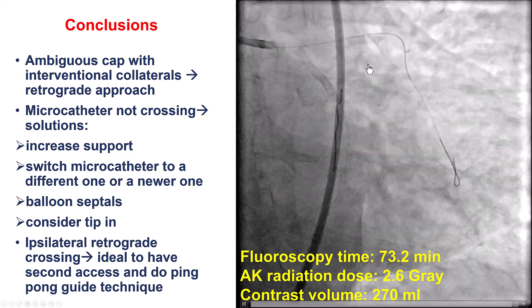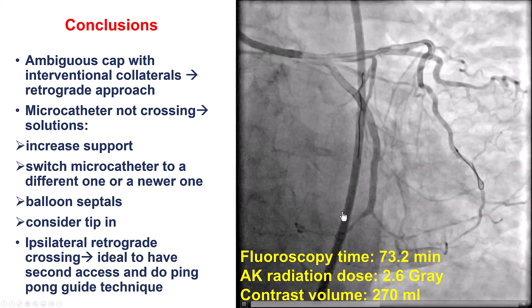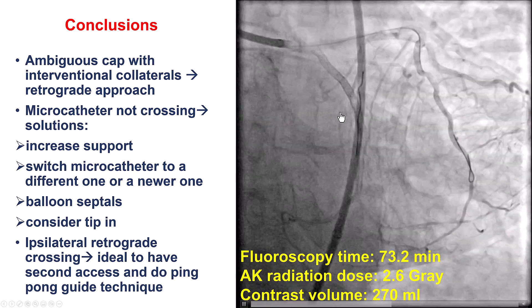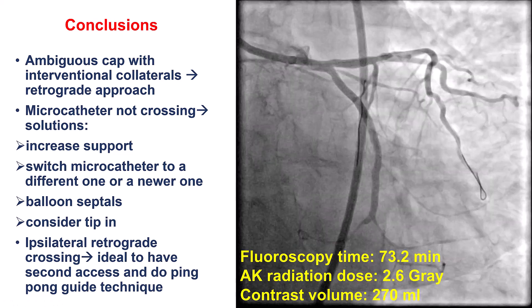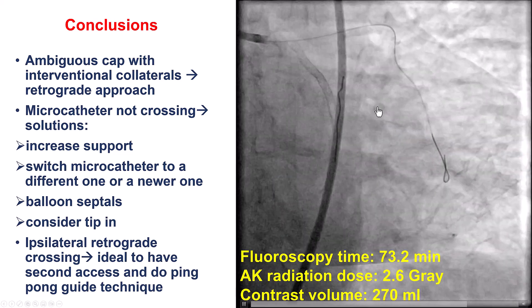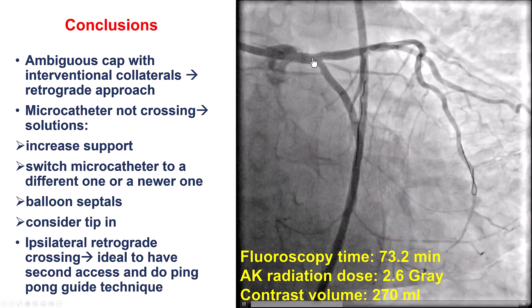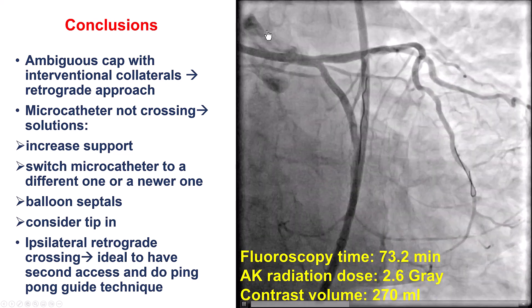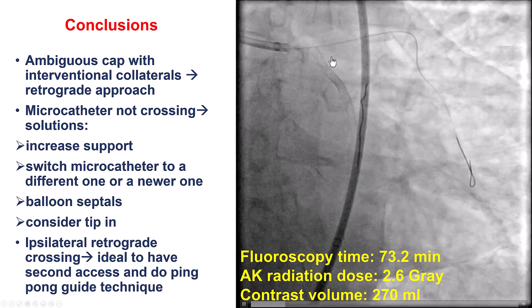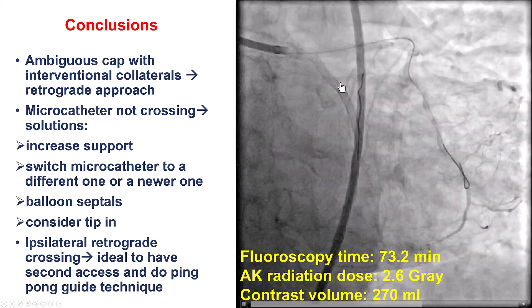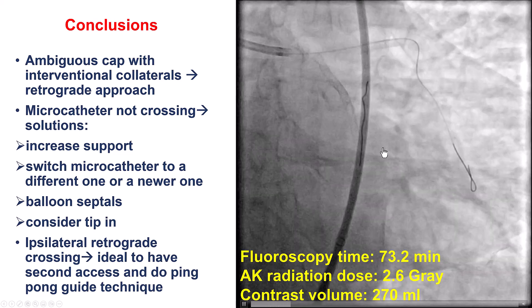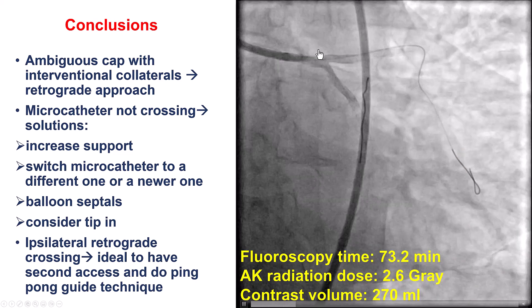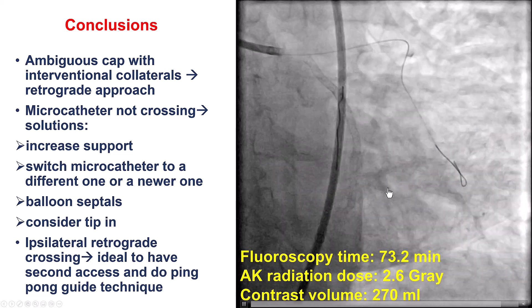In this particular case, we were eventually able to advance a new Caravelle microcatheter all the way to the distal cap and perform a reverse CART. The challenge after retrograde crossing was externalization, since everything was going through a single 8-French guide catheter. Nevertheless, we were able to externalize an R350, perform balloon angioplasty, and place a stent, achieving a nice final result.